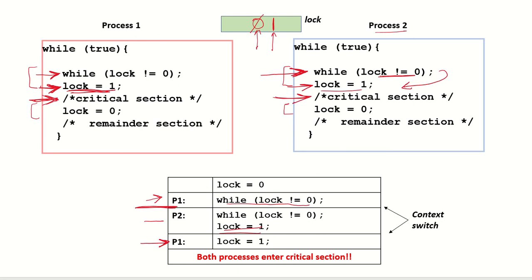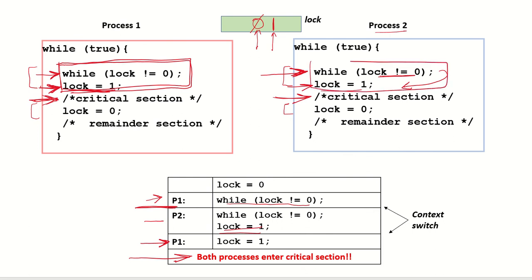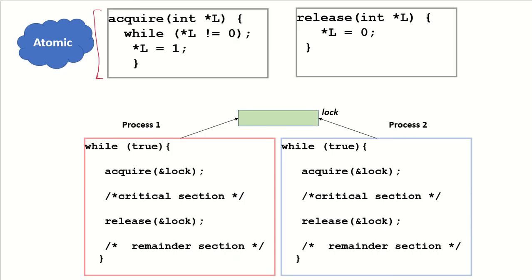Because checking the lock and modifying it was not atomic in nature, both processes have entered the critical section. This means the acquire definition must be atomic — only then can mutual exclusion be maintained. Otherwise, as we have just seen, because of the context switch that takes place, both processes will enter the critical section. This atomic acquire can be achieved using hardware instructions at the machine level — an instruction that ensures the swapping of the lock value happens atomically, guaranteeing mutual exclusion.